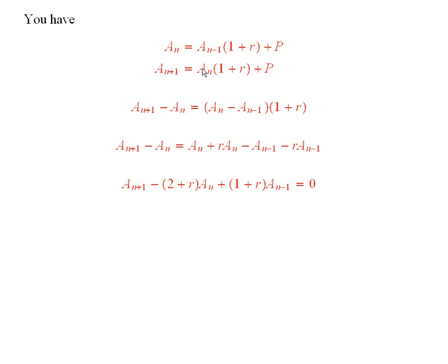Because what happens when you subtract this one from this one, the two p's cancel. So you just have a sub n minus 1 times 1 plus r, subtracted from a sub n times 1 plus r, and then we just factored out the 1 plus r.